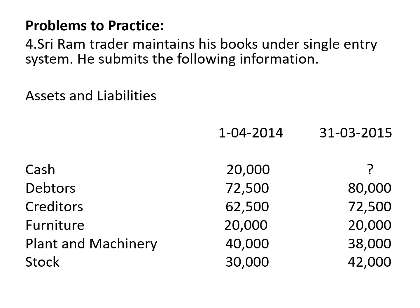Closing debtors go to debtors account and balance sheet. Creditors: opening balance 62,500, closing balance 72,500 — opening creditors go to creditors account and opening statement of affairs; closing creditors go to creditors account and balance sheet. Furniture: 20,000 opening and 20,000 closing — opening goes to opening statement; closing goes to balance sheet — check for depreciation. Plant and machinery: opening 40,000, closing 38,000 — closing goes to balance sheet. Stock: opening 30,000 goes to opening statement and trading account; closing 42,000 goes to trading account and balance sheet.